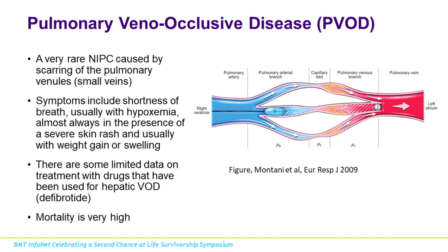Pulmonary veno-occlusive disease is a very rare non-infectious pulmonary complication involving scarring of the pulmonary venules. Symptoms include shortness of breath, hypoxemia, and usually a skin rash with weight gain or swelling. There is limited data on defibrotide, used for hepatic veno-occlusive disease, which occurs more commonly. Even in PVOD in the general population, treatment is often unclear and some patients require lung transplantation. Because it's so rare with very high mortality, we have a lot of work to do to understand what drives this condition.